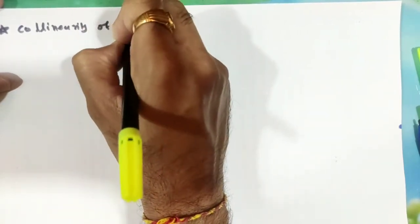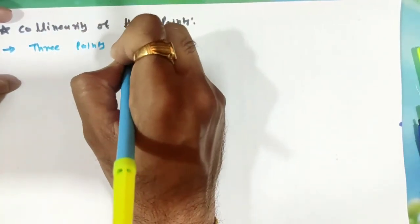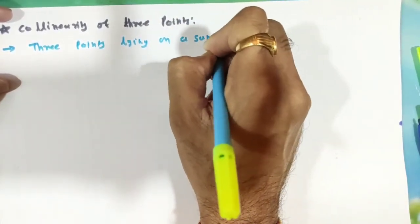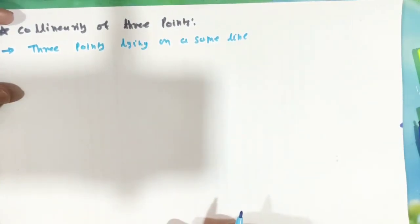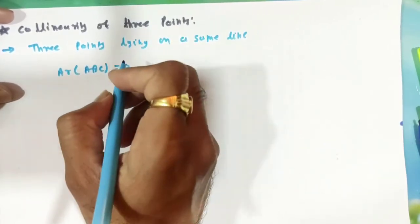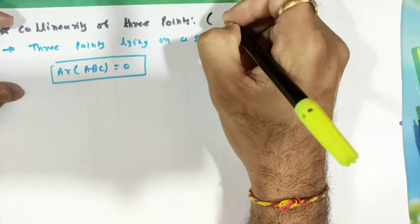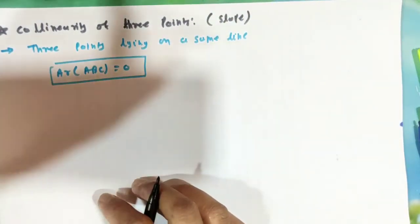Collinearity of three points lying on the same line. What is the meaning of collinearity? It means three points lie on the same line. We can find the collinearity of three points by using the area of a triangle — if the area formed by the three points is zero, they are collinear — but here we find collinearity using slope.